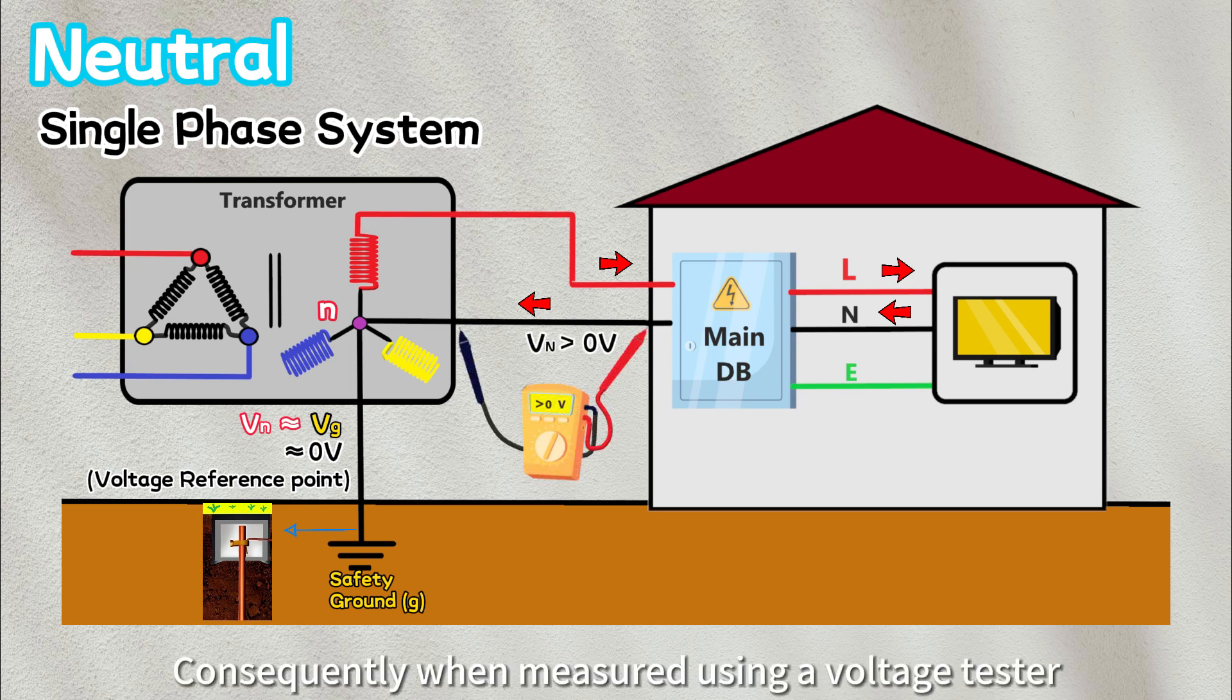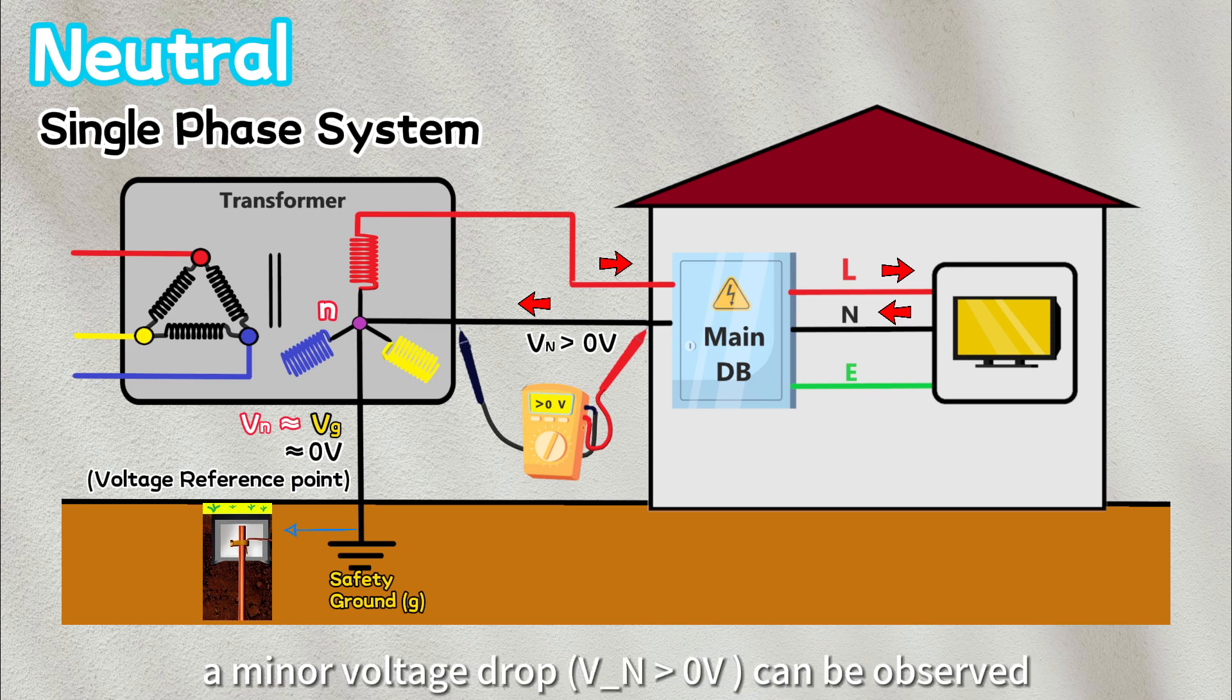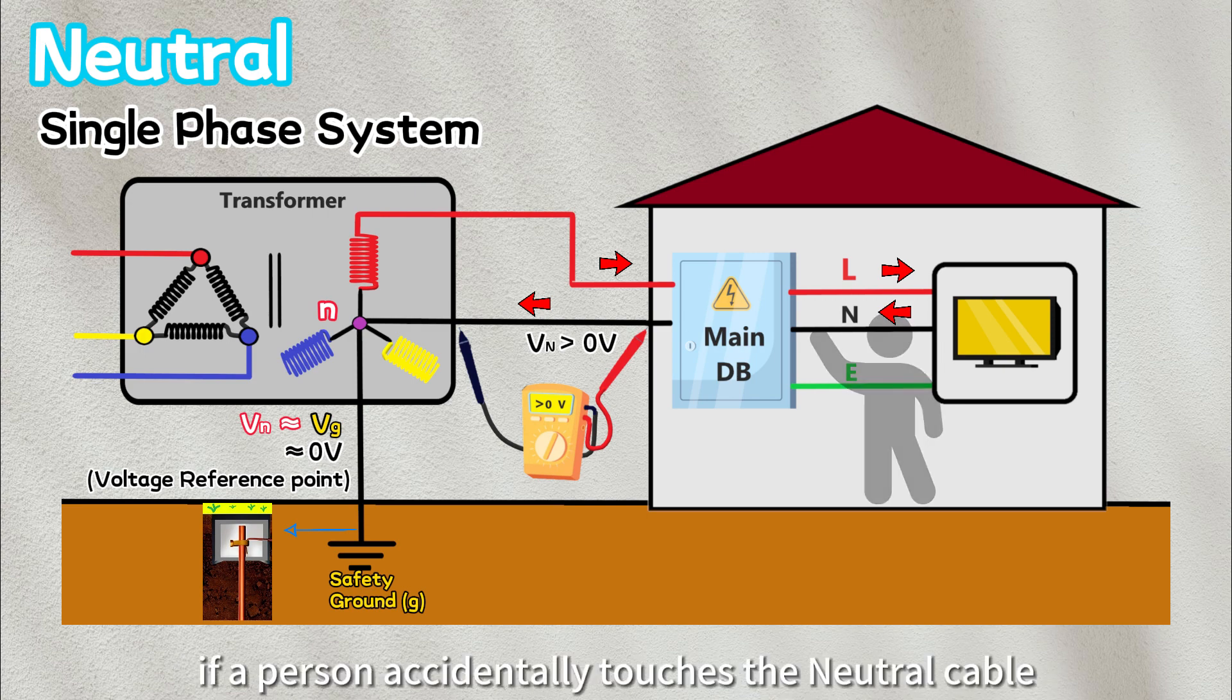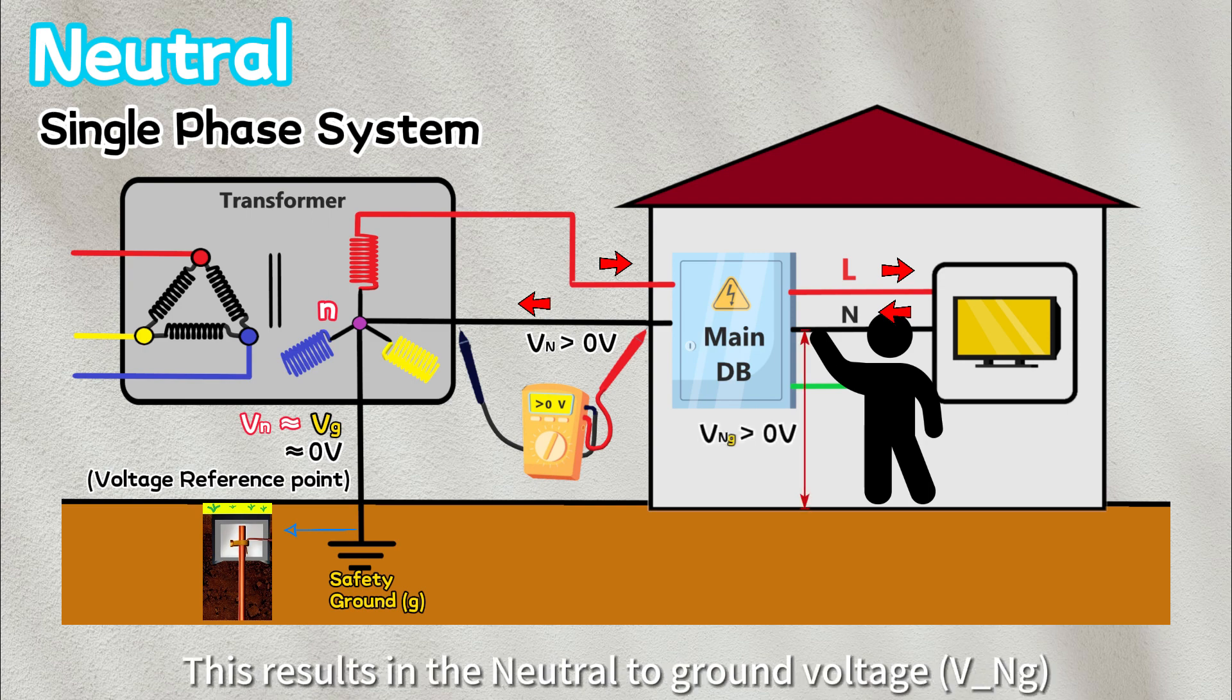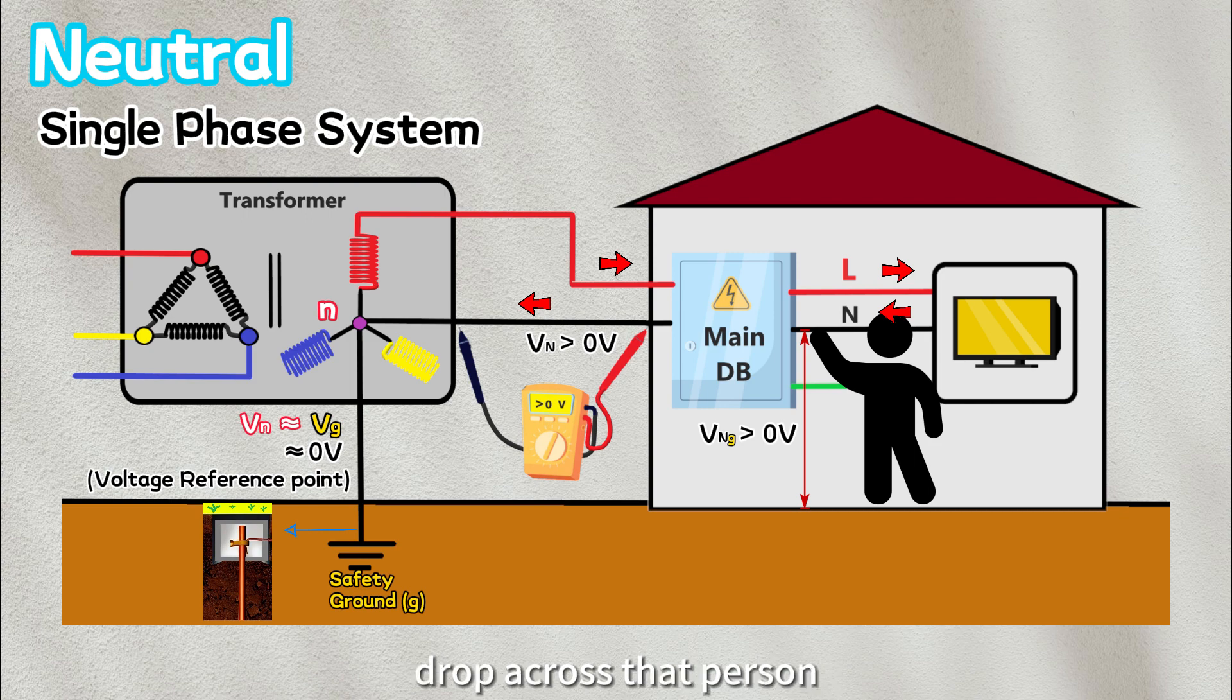Consequently, when measured using a voltage tester, a minor voltage drop can be observed. If a person accidentally touches the neutral cable, this results in the neutral to ground voltage, or known as touch voltage, drop across that person.